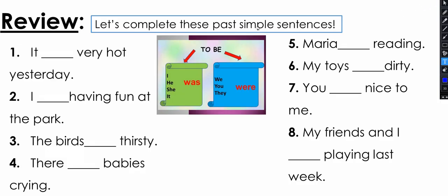Now we're going to revise the linking verbs used when talking about the past. We use 'was' or 'were' depending on our pronoun. If we are talking about I, he, she, or it — we use 'was.' For we, you, or they — we use 'were.' This is when we talk about the past, something that already happened — yesterday, the day before, or last week. For example: It was very hot yesterday. I was having fun at the park.